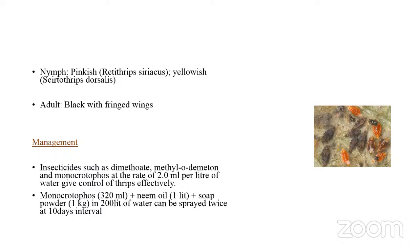The biology: adults and nymphs are very tiny. Nymphs are pinkish and adults are black with fringed wings, seen all over the plants. For management, spray insecticides like dimethoate, methyl demeton, or monocrotophos. You can also use a combination of monocrotophos along with neem oil and soap powder.